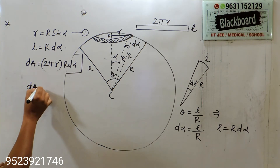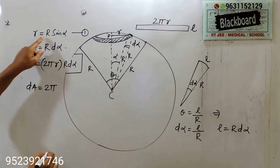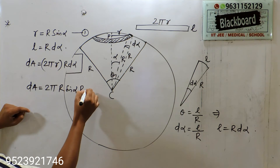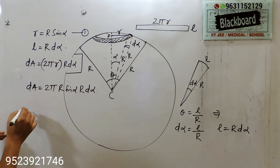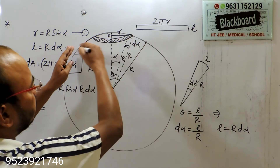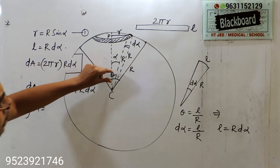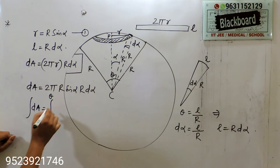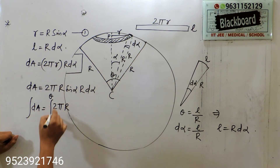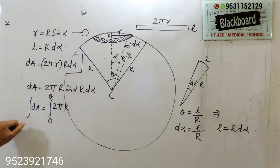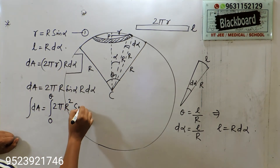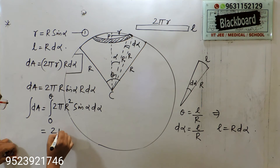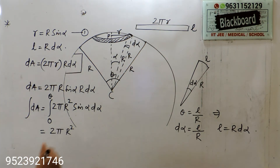Now replacing small r with R sin(alpha), we get dA = 2π × R sin(alpha) × R d(alpha). Integrating this for the complete section, the limit of the angle will go from 0 to theta. So we write the integral from 0 to theta of 2πR² sin(alpha) d(alpha), and 2πR² is taken outside the integral.